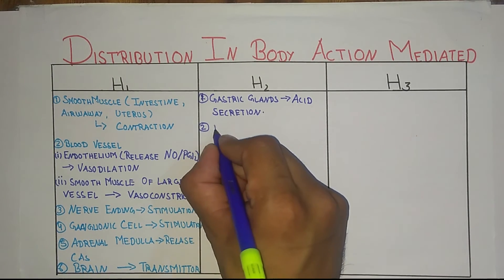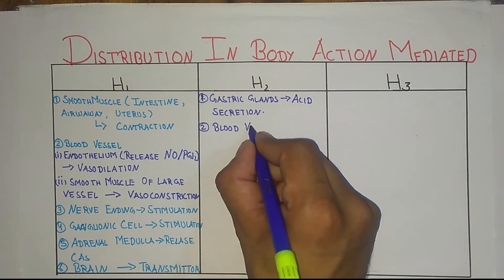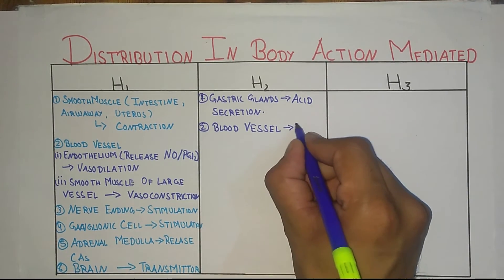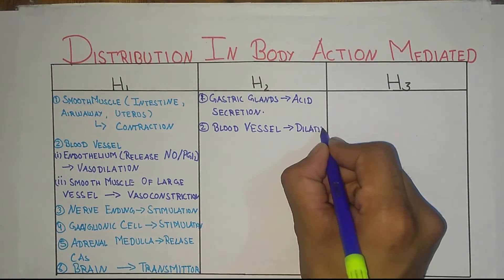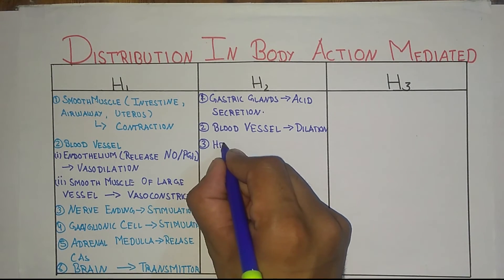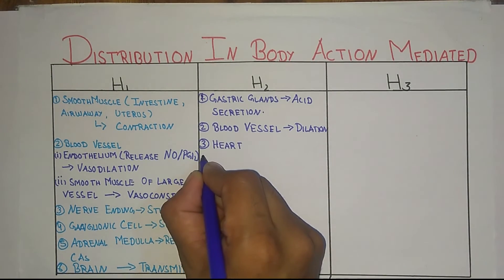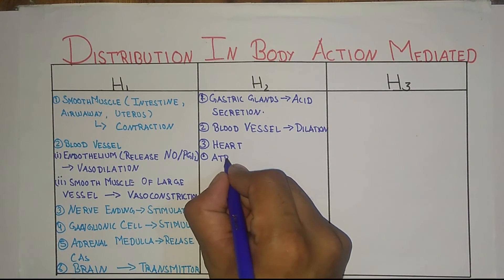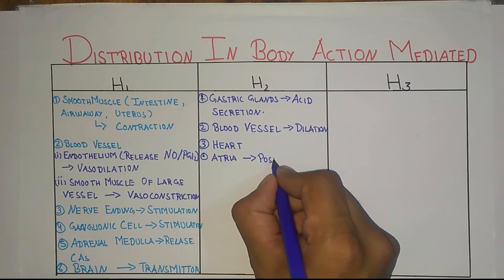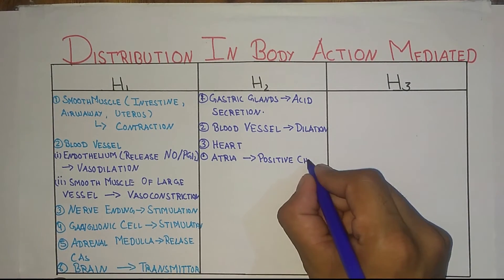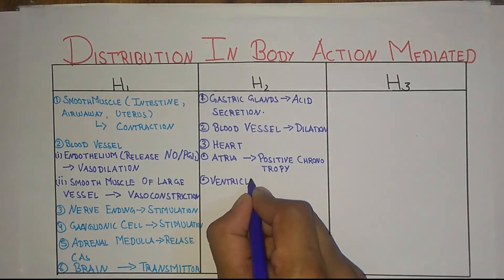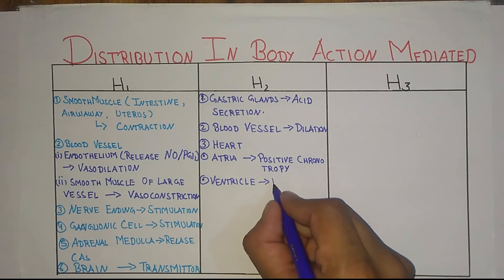Next, H2 is in blood vessels where dilation occurs. Third, it is present in heart. In atria there is positive chronotropy, and in ventricles the action is positive inotropy.